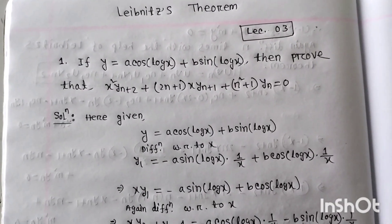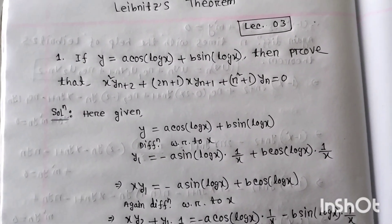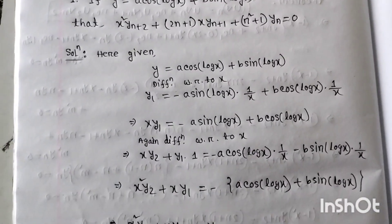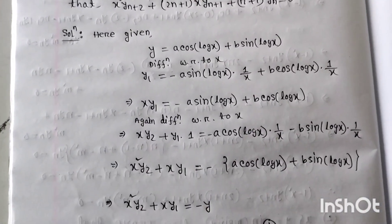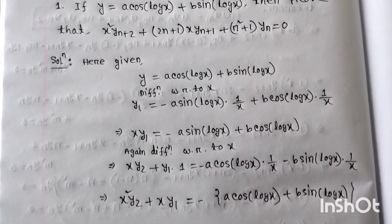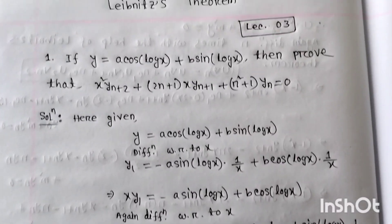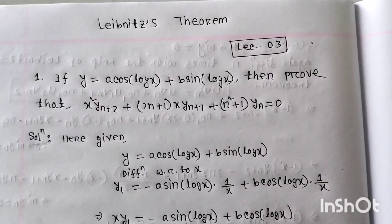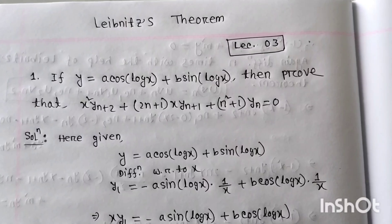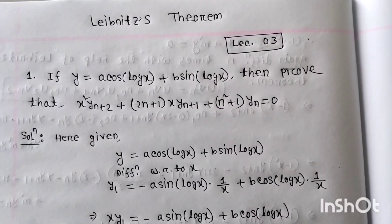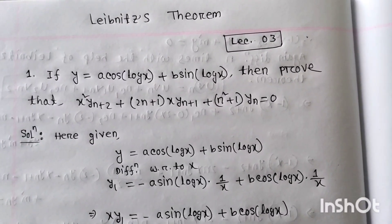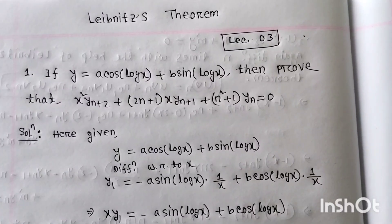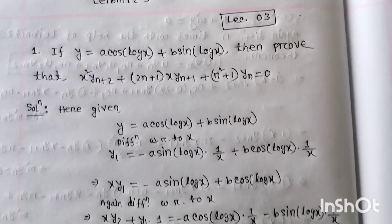Bismillahi rahmane rahim. Welcome to the class. Today we will discuss an important problem — number one: If y = a·cos(log x) + b·sin(log x), then prove that x²·y_(n+2) + (2n+1)·x·y_(n+1) + (n² + 1)·y_n = 0.